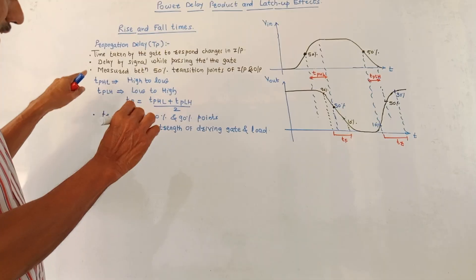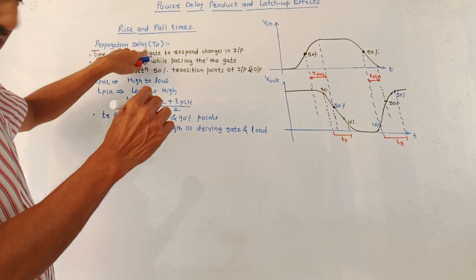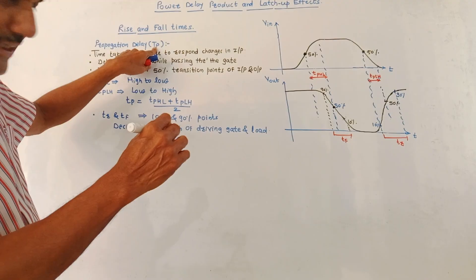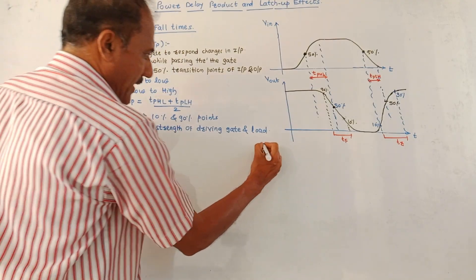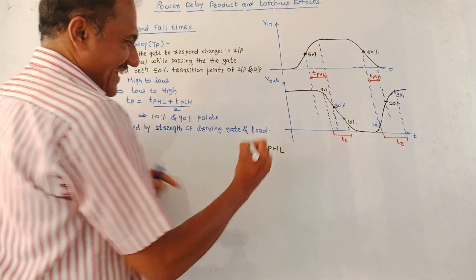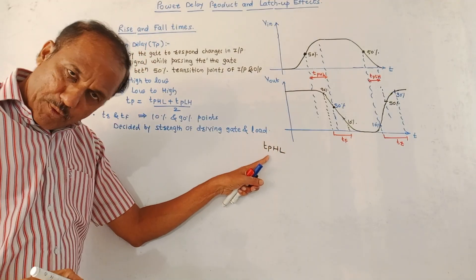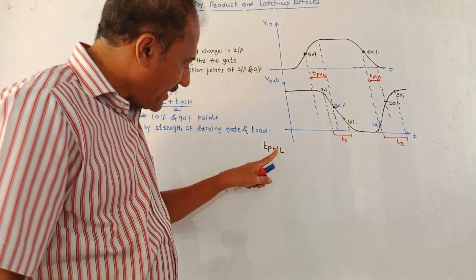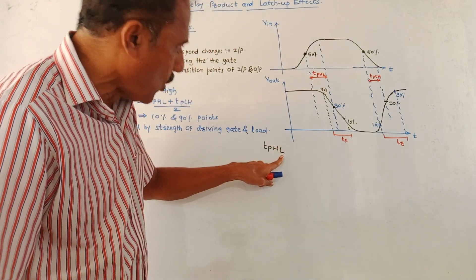There are two terms related to the propagation delay. Basically, propagation delay is denoted by notation TP. There are two terms. One is TPHL. It is TP, that is propagation delay time, high to low. HL stands for high to low.